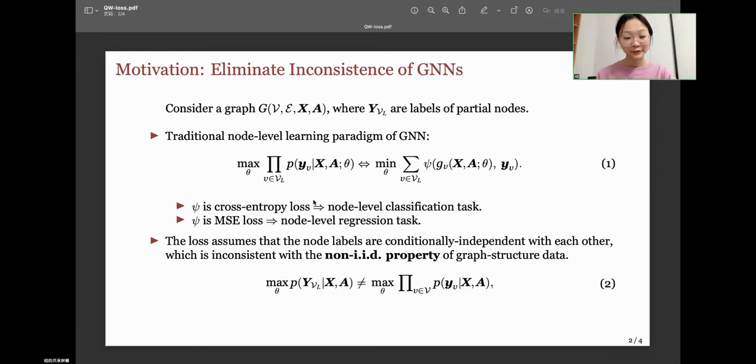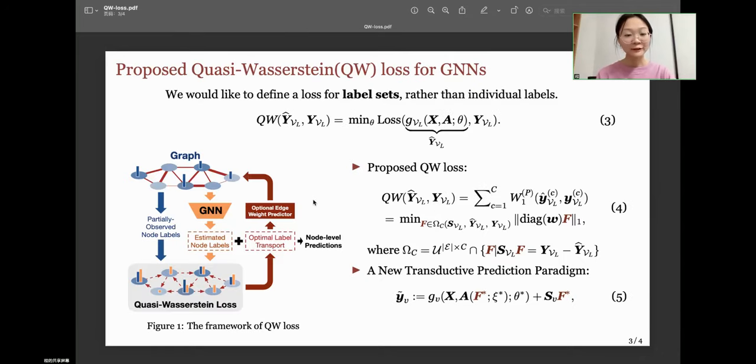We can't treat each node individually as shown in equation 2. So we define loss for the set of labels rather than individual nodes as shown in equation 3. Similarly, we consider labels of nodes as distributions and calculate the partial Wasserstein distance for each dimension of the label, which can be defined as the optimal transport problem on graph. F represents labels propagated along the graph edges.